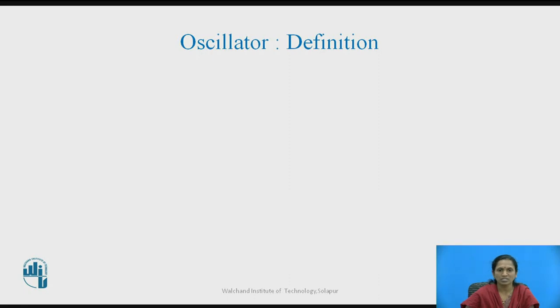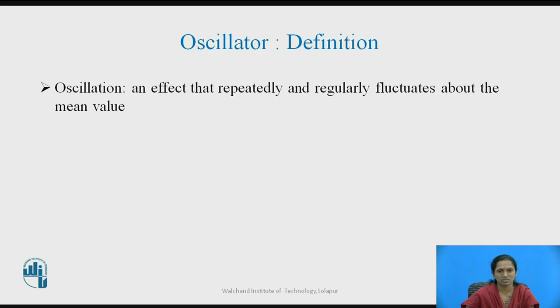Before moving towards the definition of an oscillator, just recall what is meant by oscillations. It is an effect that repeatedly and regularly fluctuates about its fixed value or mean value. The circuit which generates these oscillations is known as an oscillator circuit. This is the general definition of an oscillator circuit.